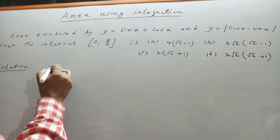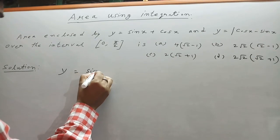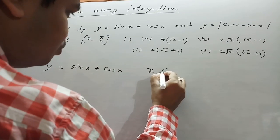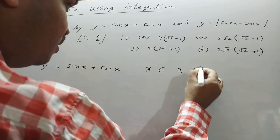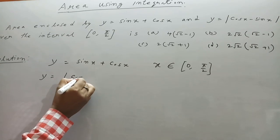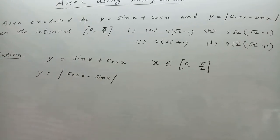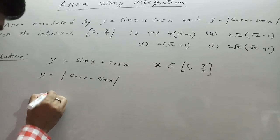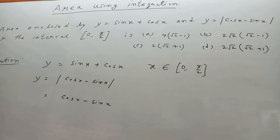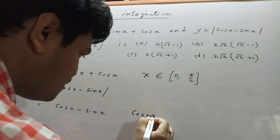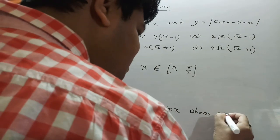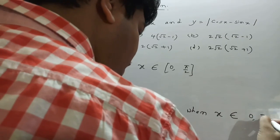Here, obviously, we have seen the curve is y = sin x + cos x, where x belongs to [0, π/2], and the other curve is y = |cos x - sin x|. This modulus equals cos x - sin x when cos x is greater than sin x, which occurs when x belongs to 0 to π/4.